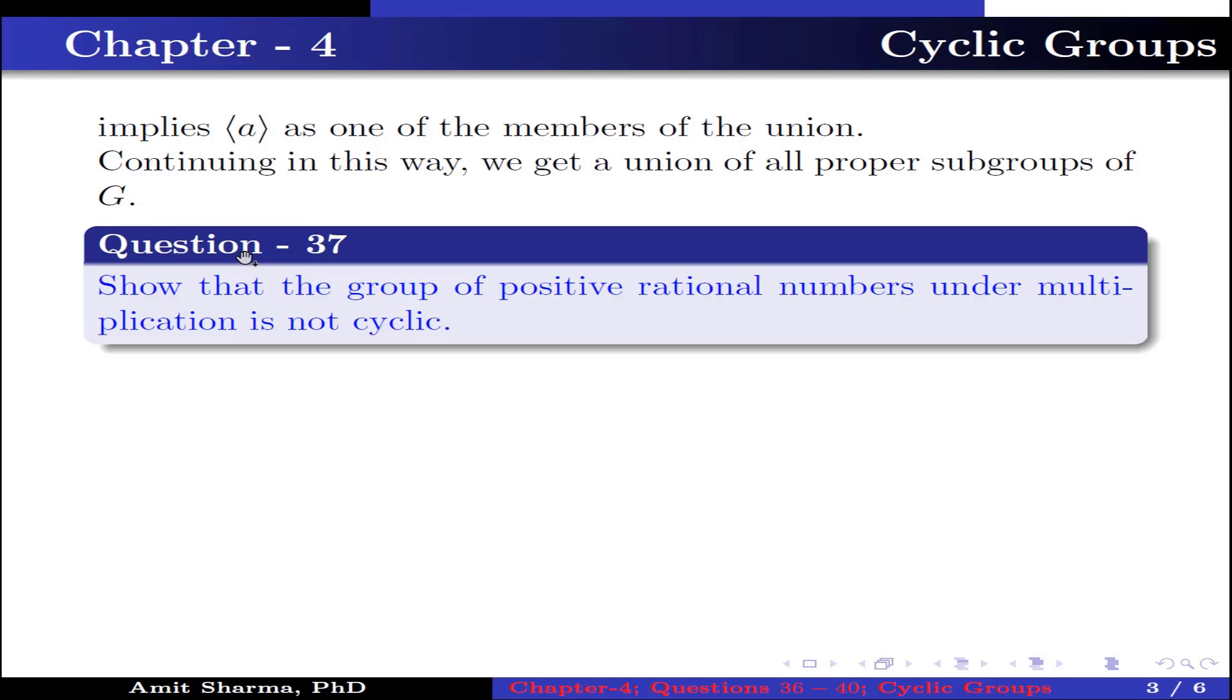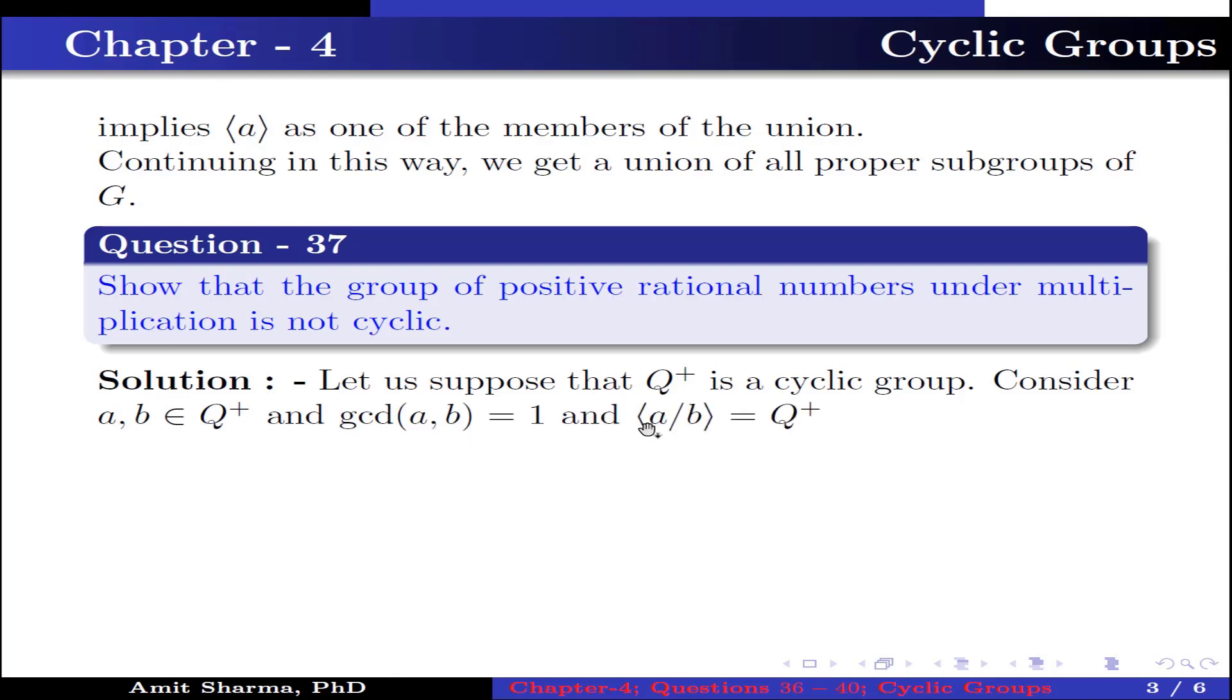Question number 37: Show that the group of positive rational numbers under multiplication is not a cyclic group. Now let us suppose that Q⁺ is a cyclic group. Consider the element a/b belongs to Q⁺ and gcd(a,b) = 1. Now let us assume that Q⁺ is generated by the element a/b.